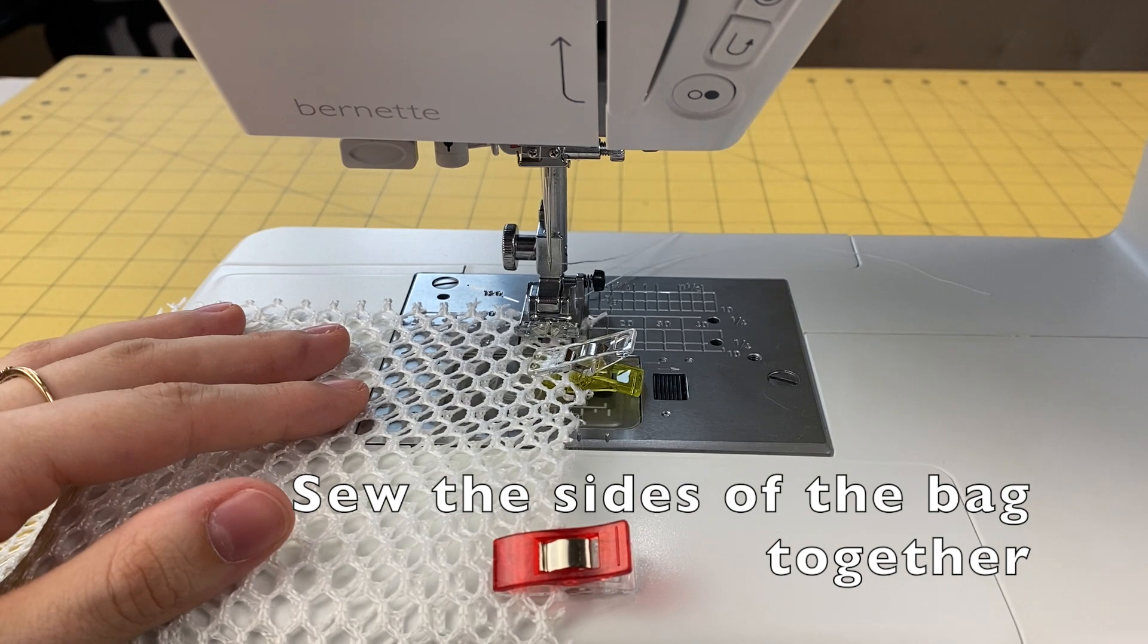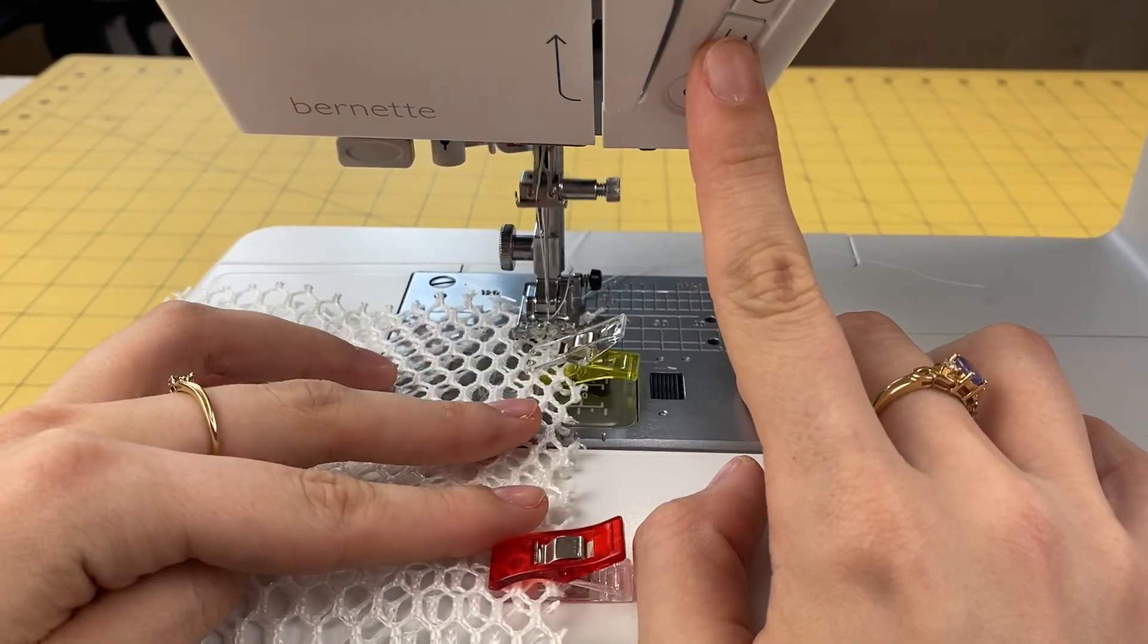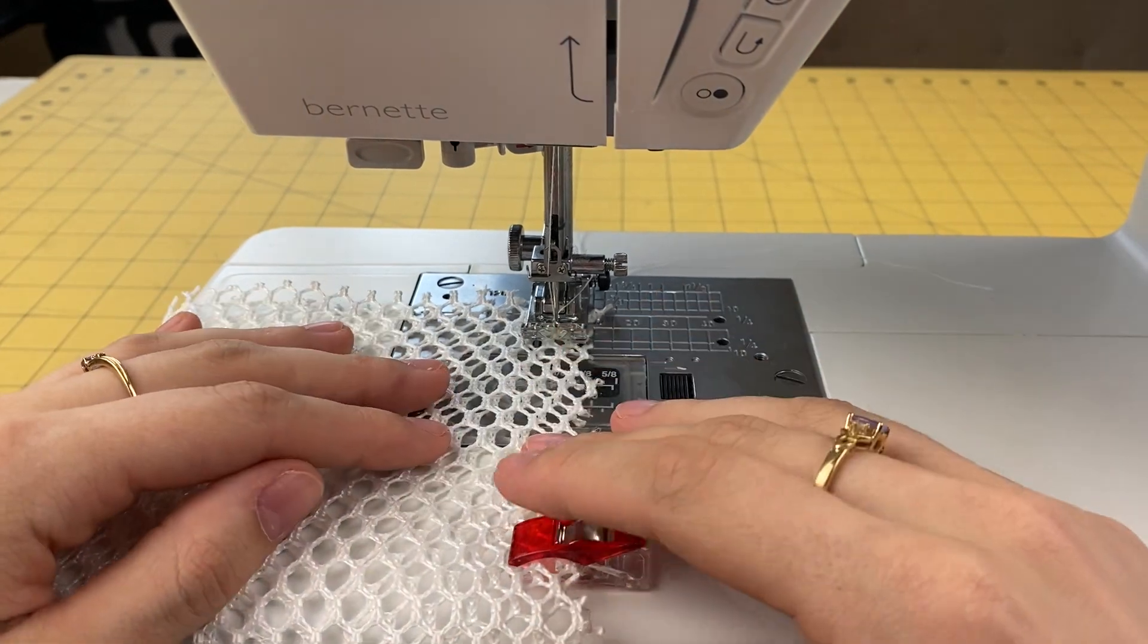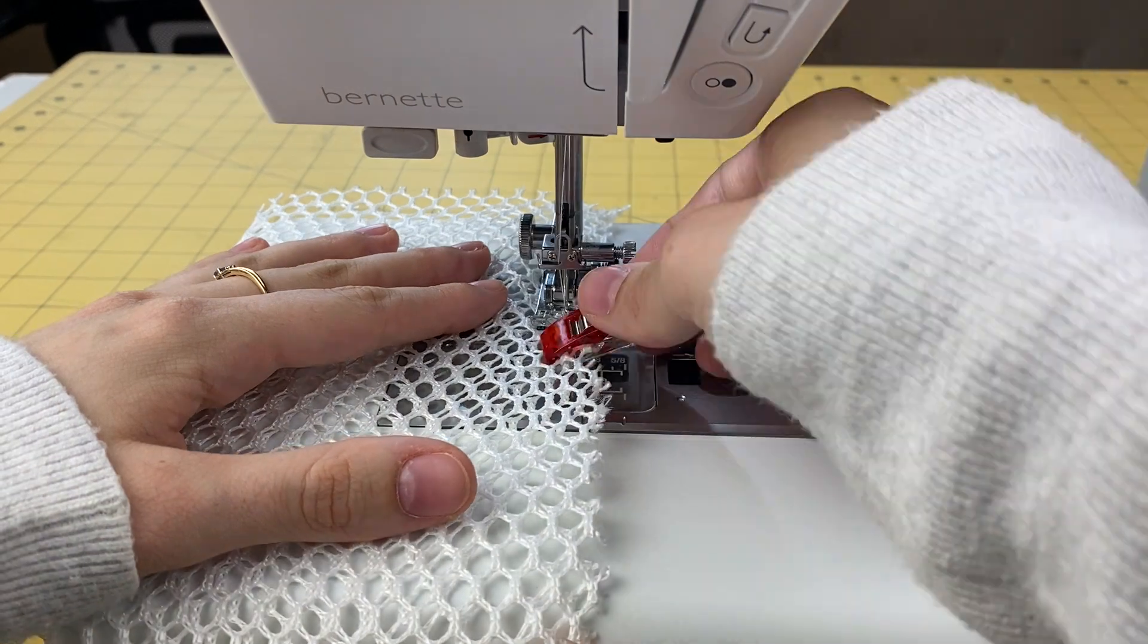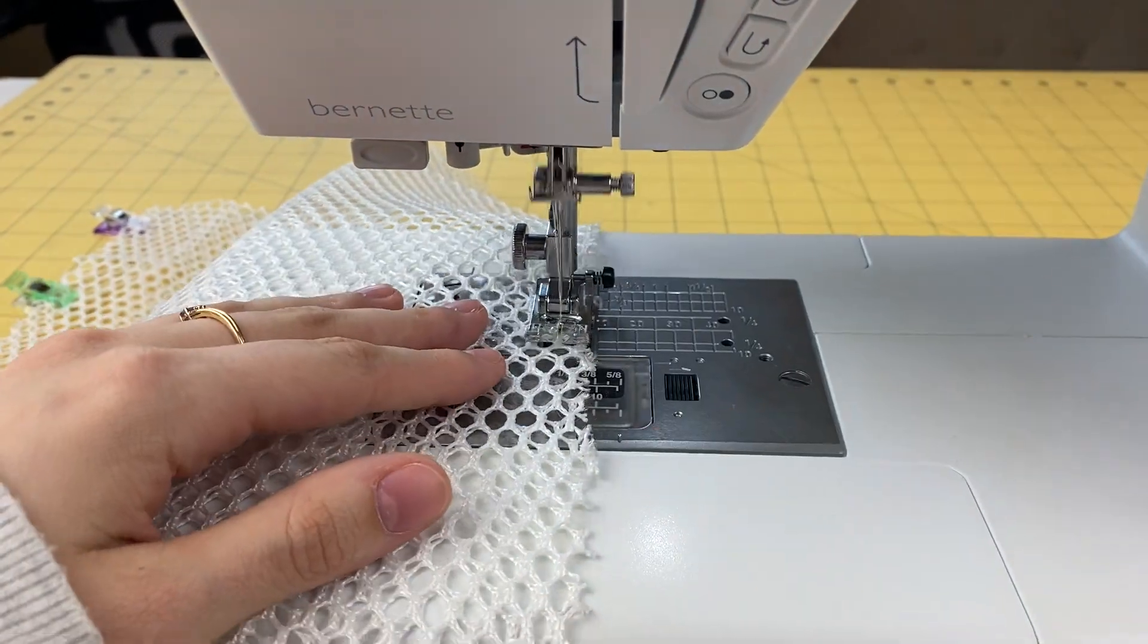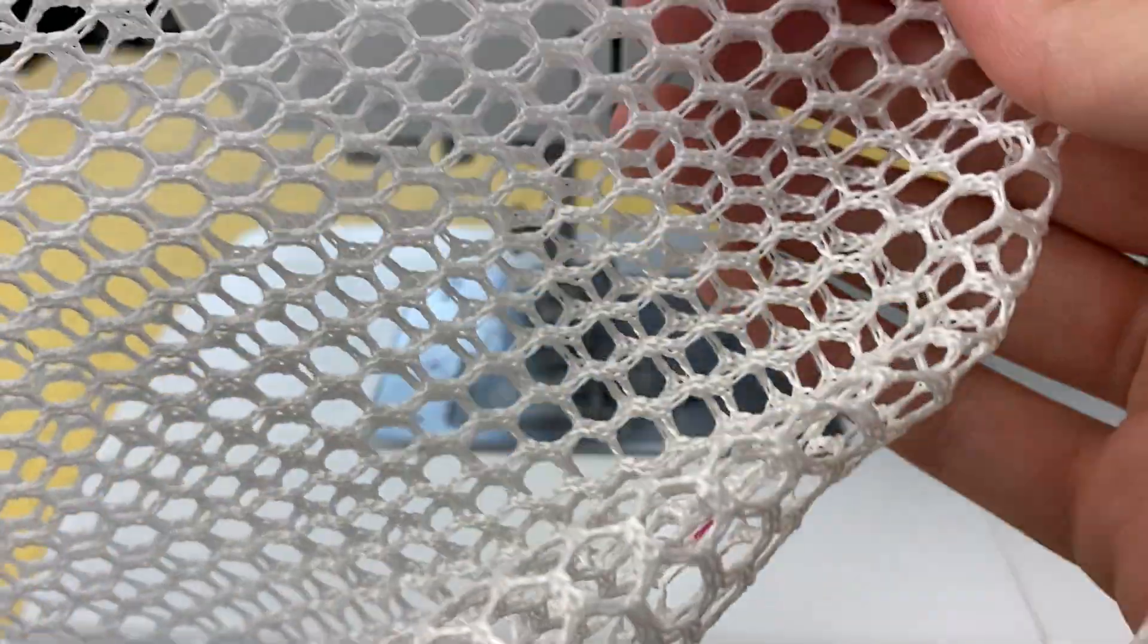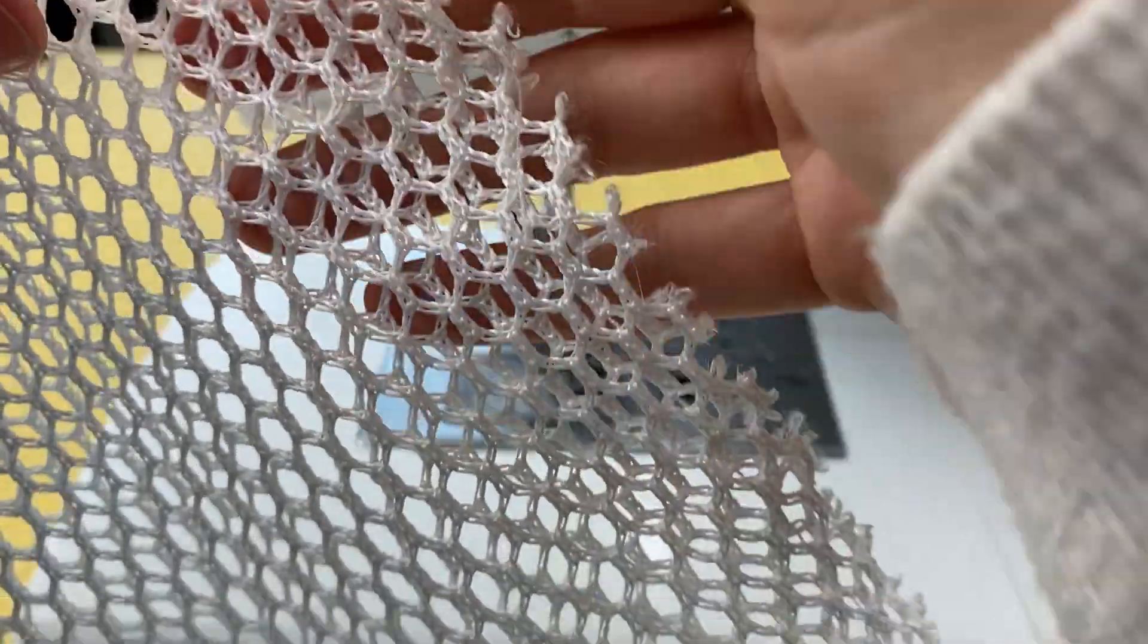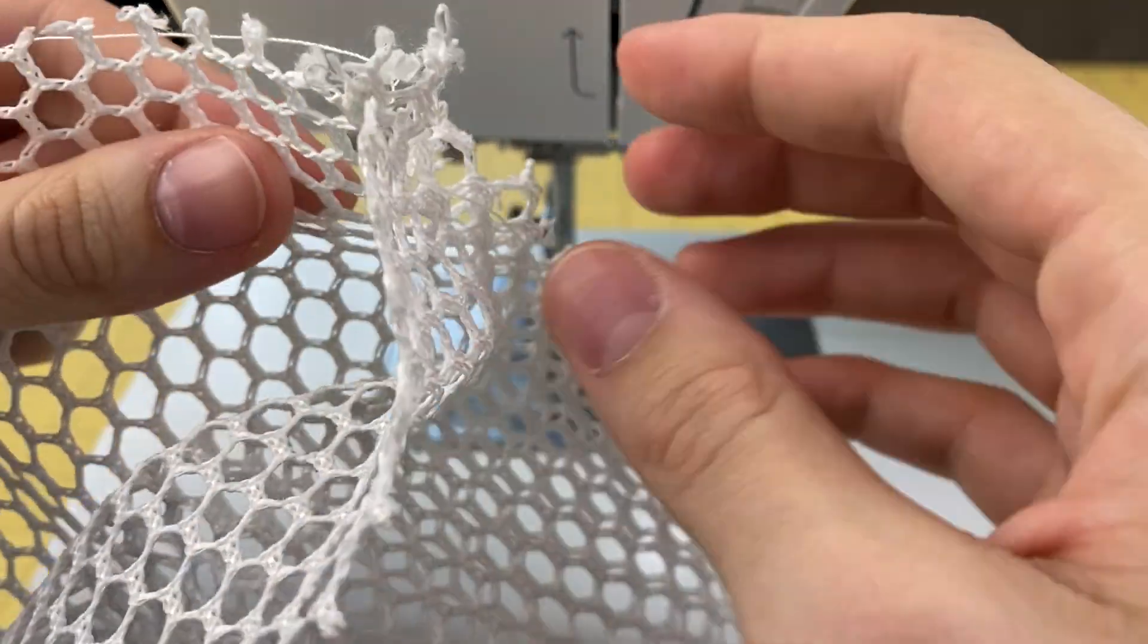Now stitch along both sides of the bag using a quarter of an inch seam allowance. Make sure to backstitch when you start and finish your stitch.